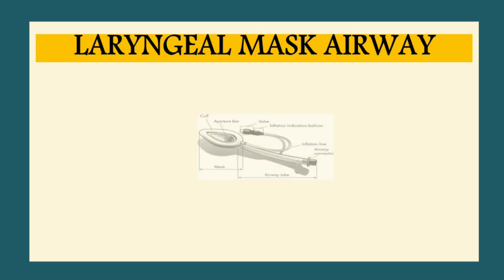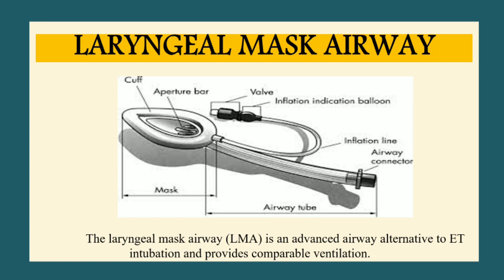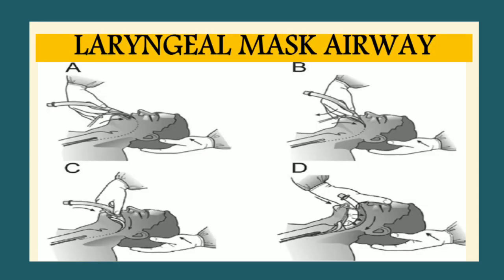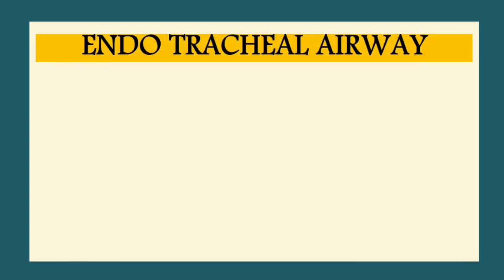The next infraglottic device is the laryngeal mask airway, also called LMA. It is an advanced airway alternative to endotracheal intubation and provides comparable ventilation. Parts of the LMA include: cuff, aperture bar, mask, airway tube, valve, inflation indicator balloon, inflation line, and airway connector. To insert, hold the LMA like a pen with the index finger of the dominant hand at the junction of the mask and tube, then slowly progress the tube into the mouth as shown.